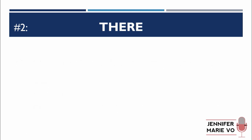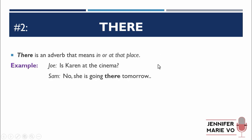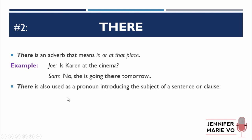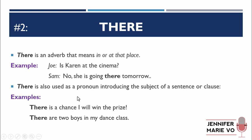The next one is "there" (T-H-E-R-E). "There" is an adverb that means "in or at that place." Example: "Is Karen at the cinema?" "No, she is going there tomorrow" — she is going to that place tomorrow. "There" is also used as a pronoun introducing the subject of a sentence or clause. Examples: "There is a chance I will win the prize." "There are two boys in my dance class."